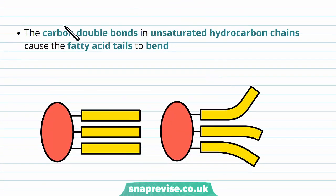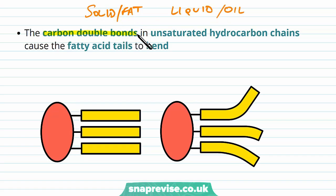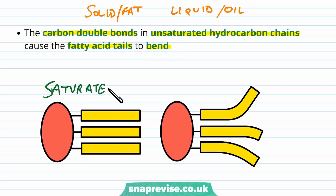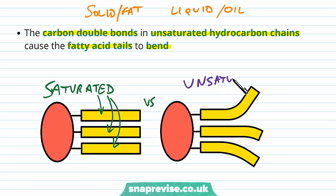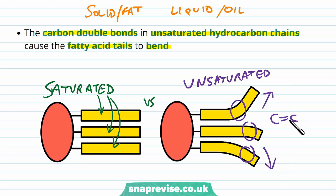Triglycerides can exist as a solid (a fat) or a liquid (an oil), and it's the carbon double bond that dictates which. The carbon double bonds in unsaturated hydrocarbon chains — monounsaturated or polyunsaturated — cause the fatty acid tails to bend slightly. On the left is a saturated fatty acid tail with all carbon single bonds, whereas on the other side, poly or monounsaturated fatty acids have bends in their chain caused by those carbon double bonds, creating a shape change.